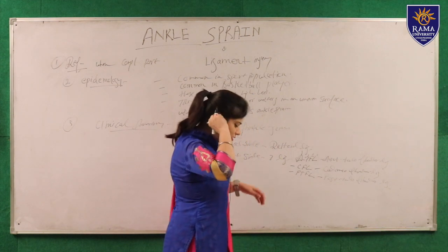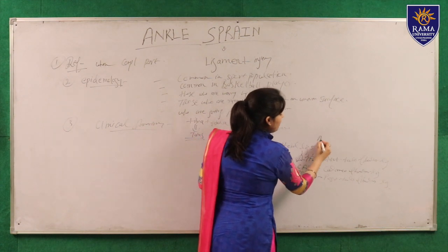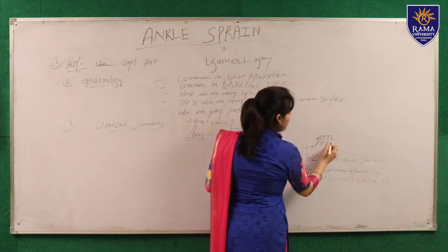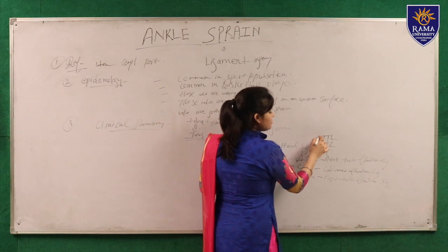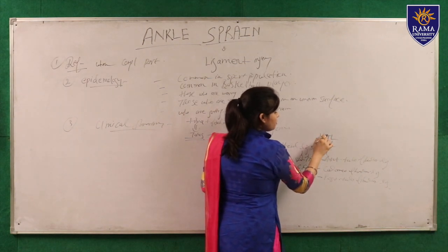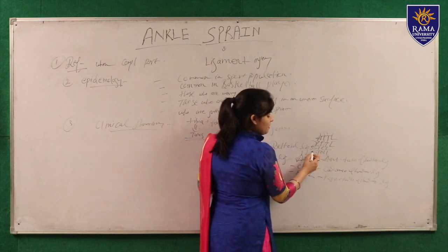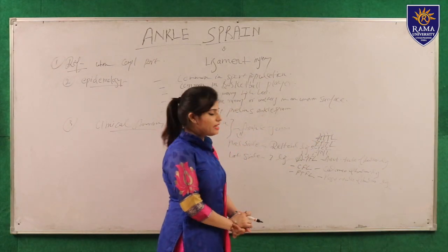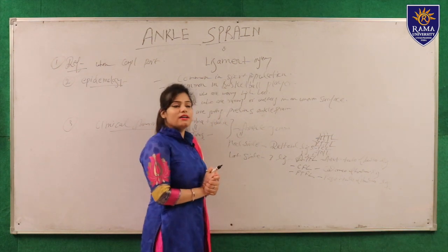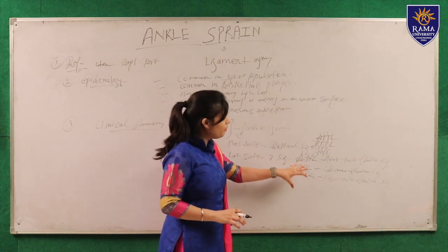The deltoid ligament is made up of four ligaments: ATTL (anterior tibiotalar ligament), PTTL (posterior tibiotalar ligament), TCL (tibial calcaneal ligament), and TNL (tibial navicular ligament). These four ligaments give stability to the medial side of the joint. The medial side has the strongest ligaments, while the lateral side has only three ligaments providing stability.